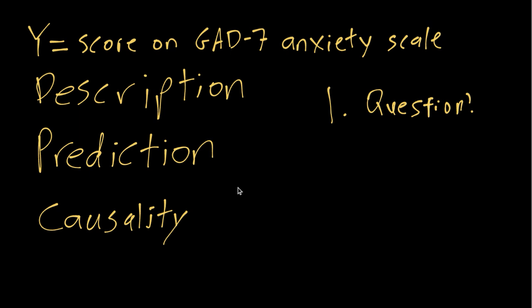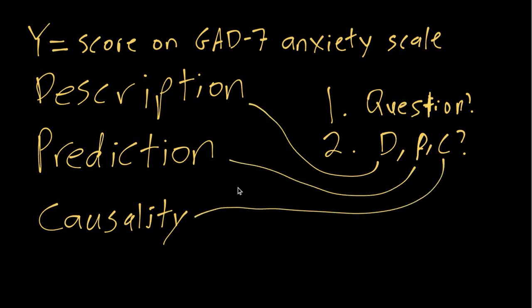Sorry, it's supposed to be a T, not an F. And then once you know the question, the next thing I would suggest is to think about whether it's a matter of description, or prediction, or causality. What type of question is it? Because that will then affect what sort of analysis would be appropriate, what sort of methods,